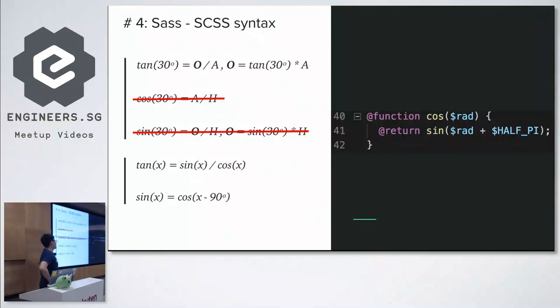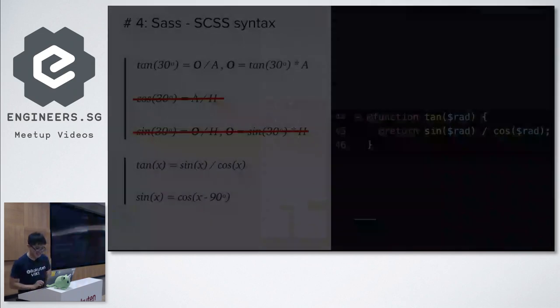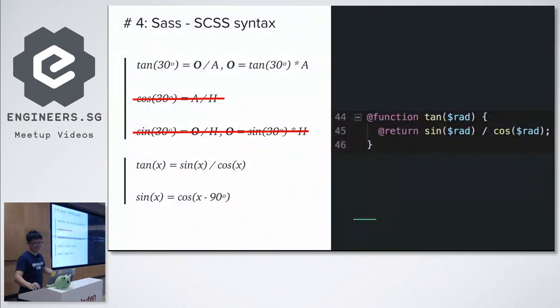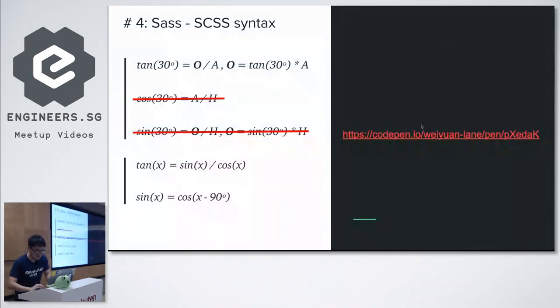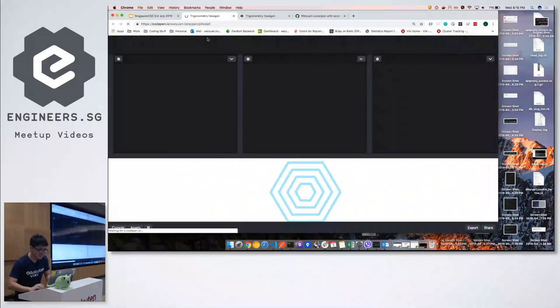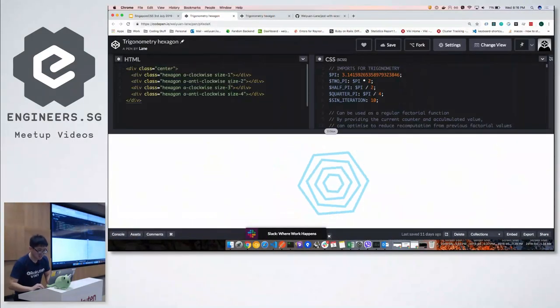So we are done with the sine, as mentioned, code reuse. Just use the sine function, very simple cosine implementation. And tangent. So we are done. So finally, we get to this point. Essentially, we managed to recreate the animation that we want at Nali in CSS.